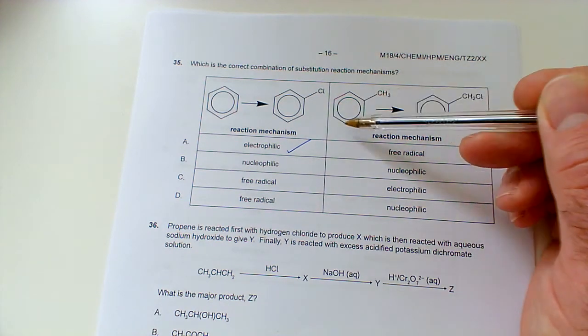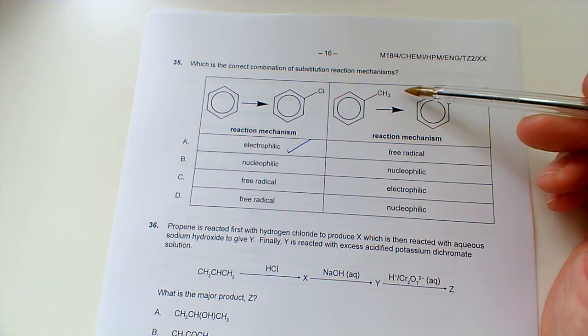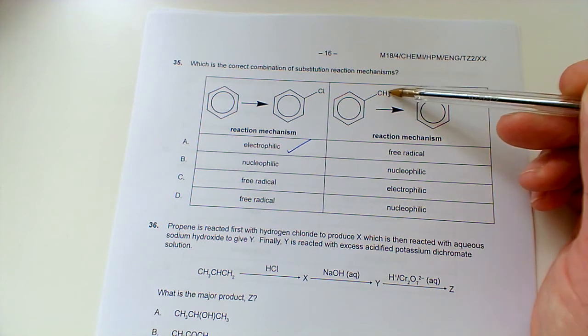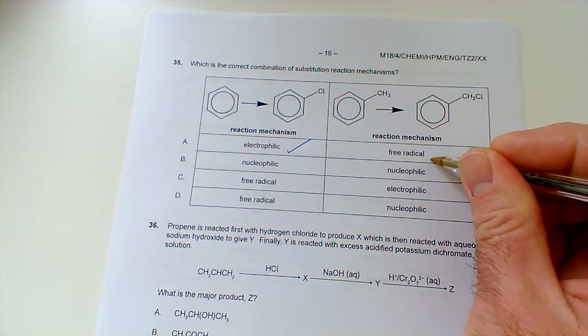And then, what we've got here, well, ignore the benzene part. It's basically we're reacting an alkane with chlorine, which would require the presence of ultraviolet light. So, this is a free radical substitution or free radical halogenation of an alkane. So, it would be this one here.